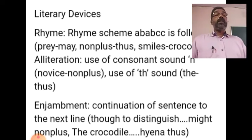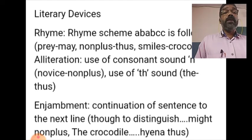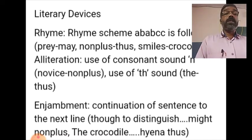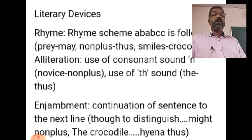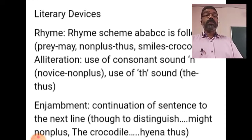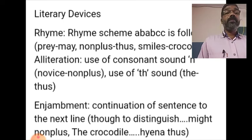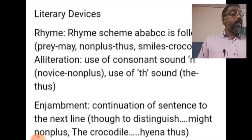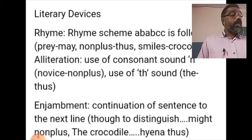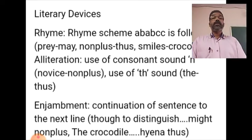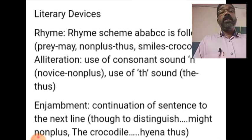Another alliteration is words beginning with TH: 'the' and 'thus' — both words begin with TH. Then enjambment is used, where a sentence continues to the next consecutive line without a punctuation mark. Examples of enjambment in this stanza: 'Though to distinguish beast of prey, a novice might non-plus,' and 'The crocodile you always may tell from the hyena, thus.'